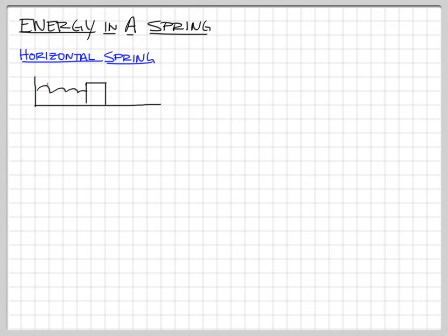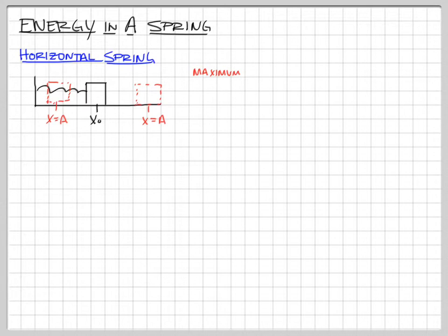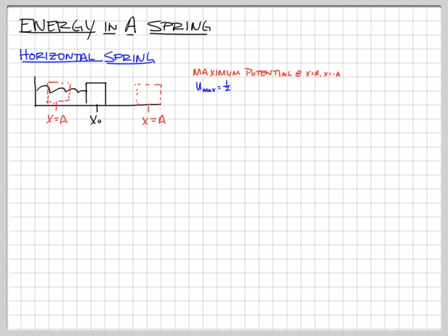We have our x = 0 position, which is our equilibrium position, and then we have our amplitudes x = A and x = −A. At equilibrium the spring is not stretched, so there's no spring potential energy. But at x = A and x = −A we have our maximum potential energies. Since it's a spring, the potential energy is ½kx², so our maximum potential energy is ½kA².